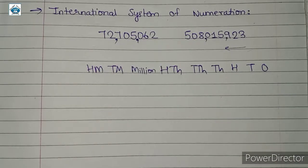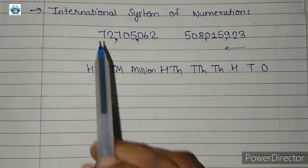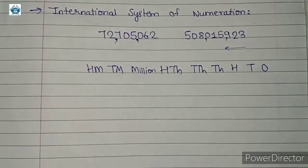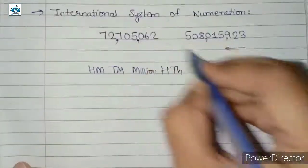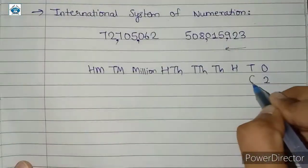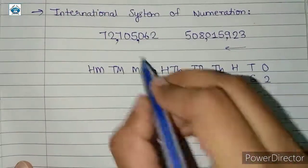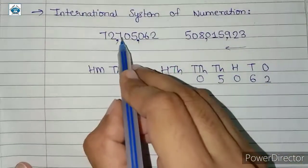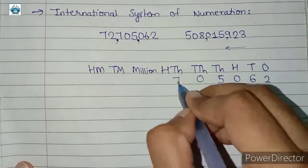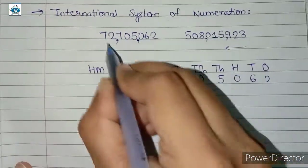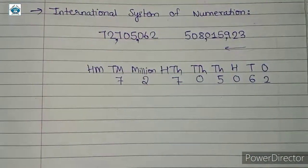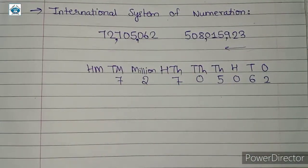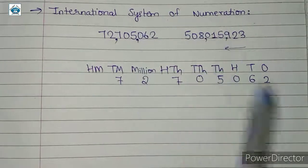So we have the placement box for the international system of numeration: ones, tens, hundreds, thousands, ten-thousands, hundred-thousands, million, ten-million, and hundred-million. If we were to arrange the number 72705062 in this placement box, two comes in ones, six in tens, zero in hundreds, five in thousands, zero in ten-thousands, seven in hundred-thousands.